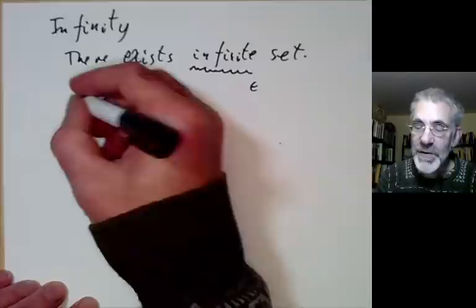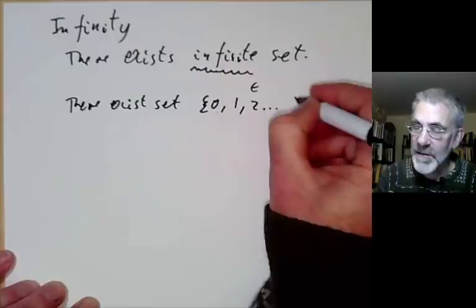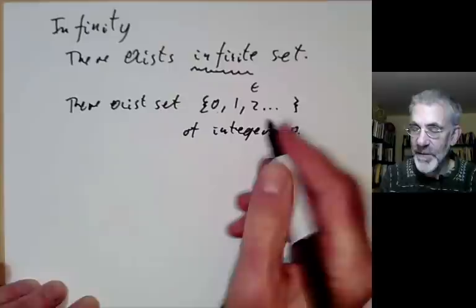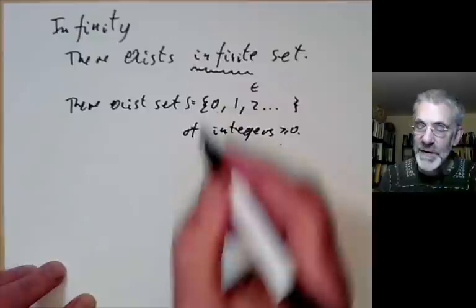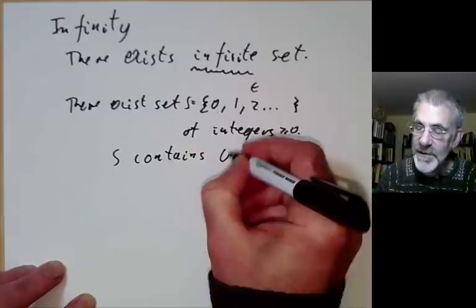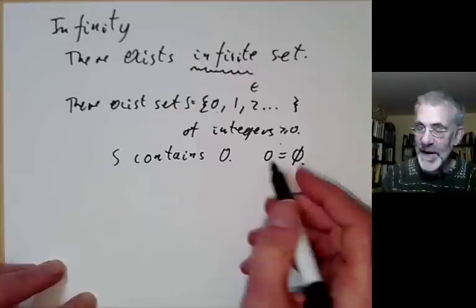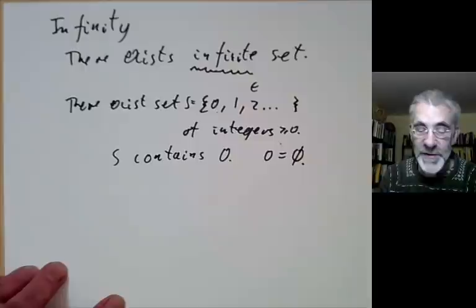So how can you say there is an infinite set? Well, you could say there exists a set {0, 1, 2, ...} of integers greater than or equal to 0. But this runs into the same problem that set theory doesn't know what an integer actually is until you tell it. So we've got to define what an integer is. Let's call this set S. We might say S contains 0 — well, let's write 0 as the empty set — and also if it contains an integer, it contains that integer plus 1.